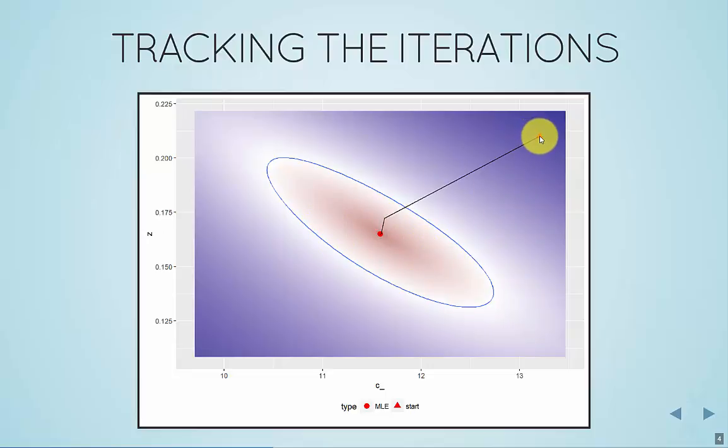So if I start way over here, on the first iteration of the algorithm that's trying to maximize the likelihood, what it's doing is identifying which direction the likelihood surface decreases and how fast, and then it takes a step to this point.